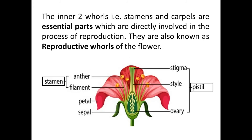The inner two whorls are stamens and carpels. They are the essential parts, which are directly involved in the process of sexual reproduction. The stamens and carpels are responsible for sexual reproduction in plants. They are also known as the reproductive whorls of the flower.